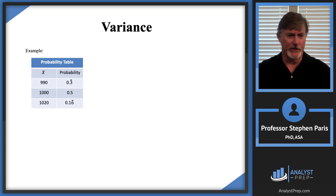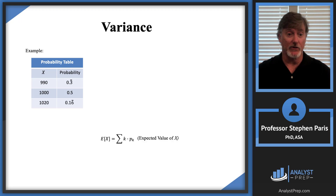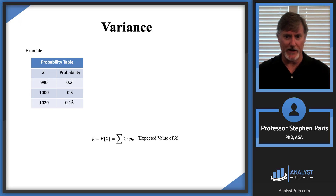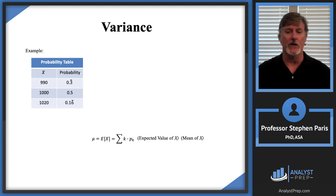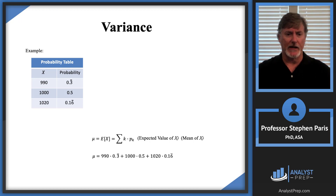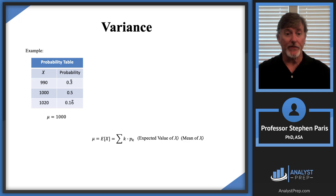I've got this discrete random variable. We've already talked about what the expected value of the random variable is — it's just the sum product. That's the expected value, also referred to as the mean of the random variable, denoted mu. When I take the sum product — multiplying 990 times 0.3-repeating and so forth — I get 1000. So the mean of this random variable is 1000.